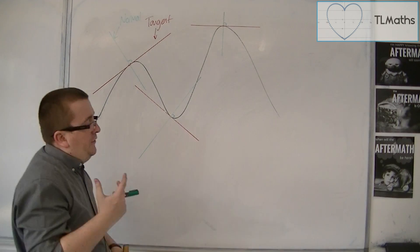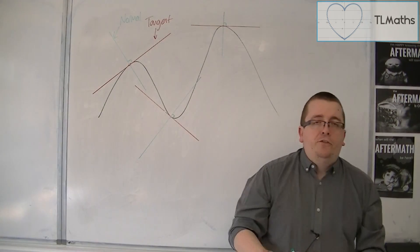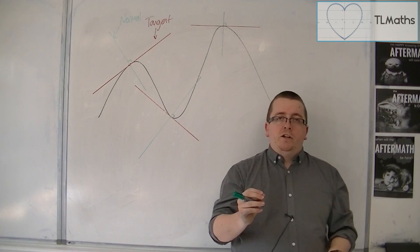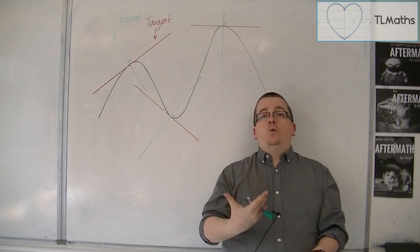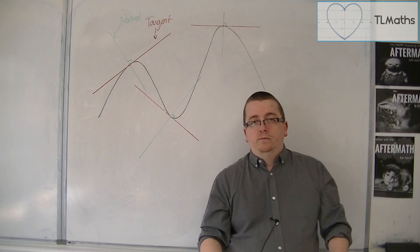So it makes sense then that if we could find the gradient of a tangent line, we could use the negative reciprocal to find the equation of a normal.